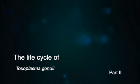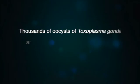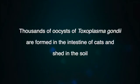The Life Cycle of Toxoplasma gondii, Part 2. Thousands of oocysts of Toxoplasma gondii are formed in the intestine of cats and shed in the soil.